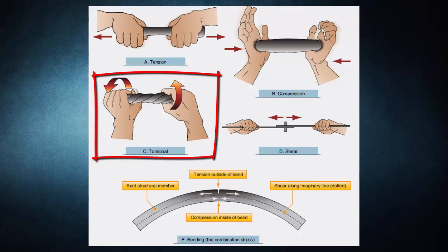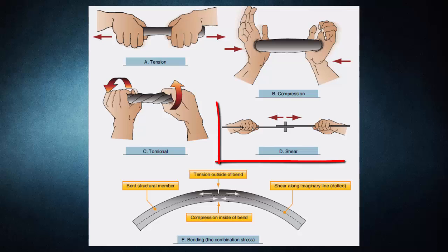Torsion is the stress that produces twisting. While moving the aircraft forward, the engine also tends to twist it to one side, but other aircraft components hold it on course, thus creating torsion. The torsion strength of a material is its resistance to twisting or torque. Shear is the stress that resists the force tending to cause one layer of a material to slide over an adjacent layer. Two riveted plates in tension subject the rivets to a shearing force. Usually the shearing strength of a material is either equal to or less than its tensile or compressive strength. Aircraft parts, especially screws, bolts, and rivets, are often subject to a shearing force.